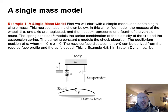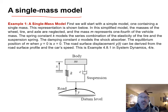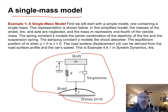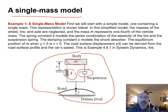Next let's take a step back and look at a simpler single-mass model. In this model we have a body of mass m fitted to a suspension with damping coefficient c and spring constant k.